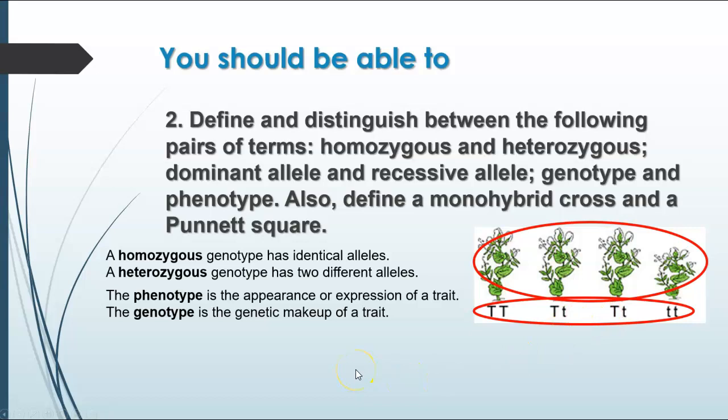A Punnett square is how we go about calculating the likelihood of any particular combination of alleles in the offspring. Remember that the letters you put on the outside of the Punnett square represent the possible gametes that could be inherited from that particular parent, and the inside boxes show the results if a particular sperm cell gets with a particular egg cell. Remember also that a Punnett square is a probability, not a promise. It doesn't always work out that way, and every fertilization event requires a new Punnett square — it's not cumulative. Each fertilization event is independent of all the others.